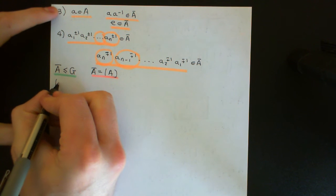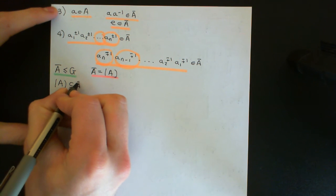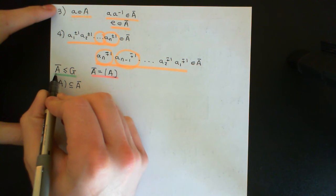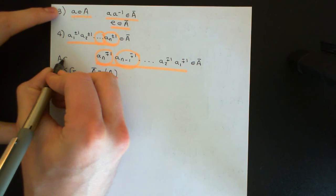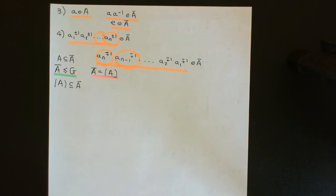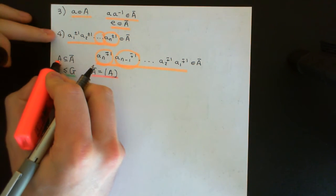Firstly, note that the subgroup generated by A is going to be a subset of Ā (A closure). The reason is that we know A closure is a subgroup of G which completely contains the set A. A is completely contained within A closure because A closure is all finite products of elements of the set A and their inverses. So of course it's going to include products where you just have one element in the product, and you take all elements of the set A and construct these one-element products for each of them, which forces all elements of A to be in A closure.